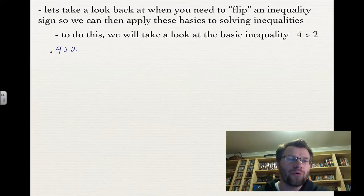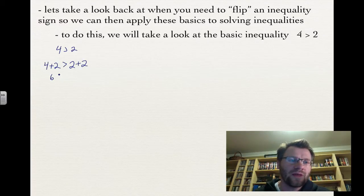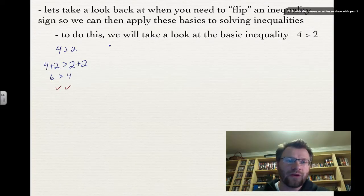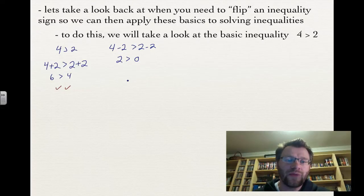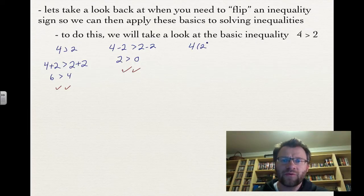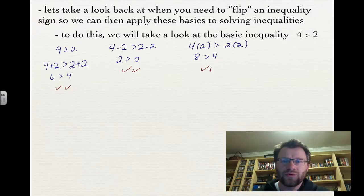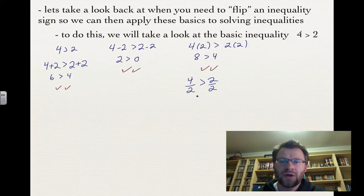We're going to perform all operations with 4 is greater than 2. First, we add the same number to both sides — adding 2 gives us 6 is greater than 4. That is still true, so we didn't have to flip the inequality sign. If we subtract 2 from both sides, we get 2 is greater than 0 — still true, no flip needed. If we multiply both sides by 2, we get 8 is greater than 4 — still true. If we divide both sides by 2, we get 2 is greater than 1 — still true, no flip needed.